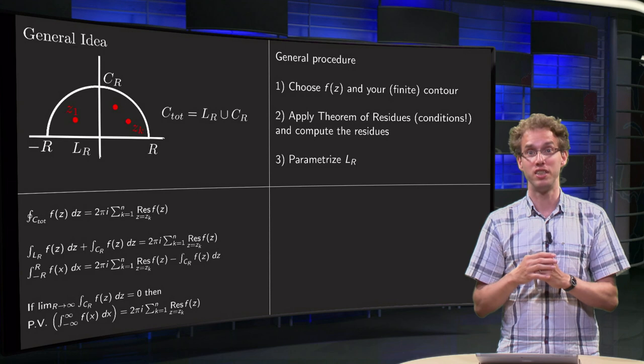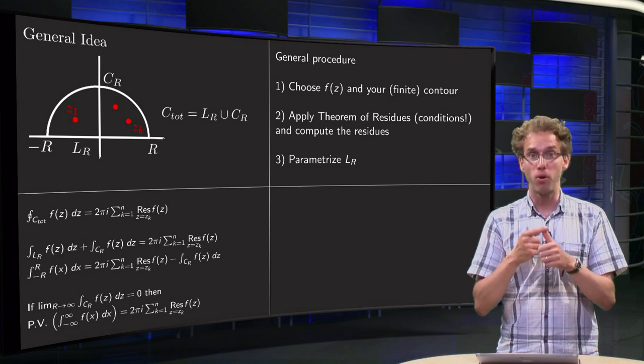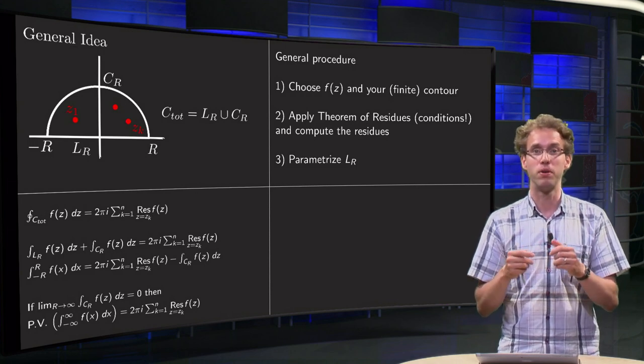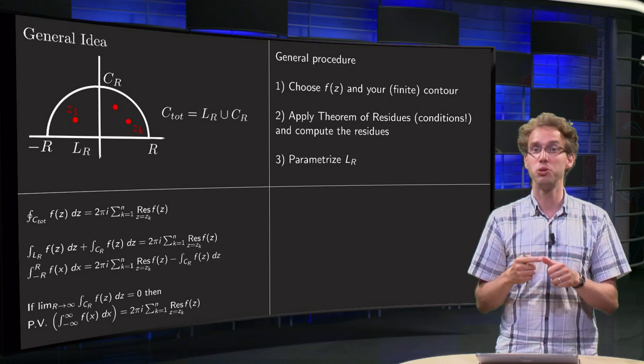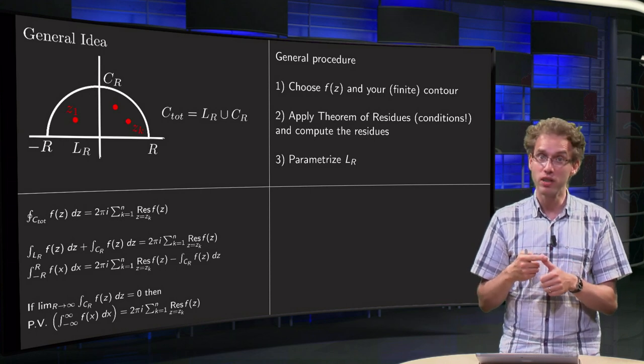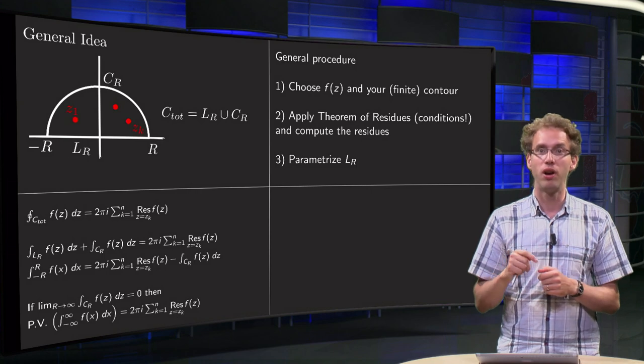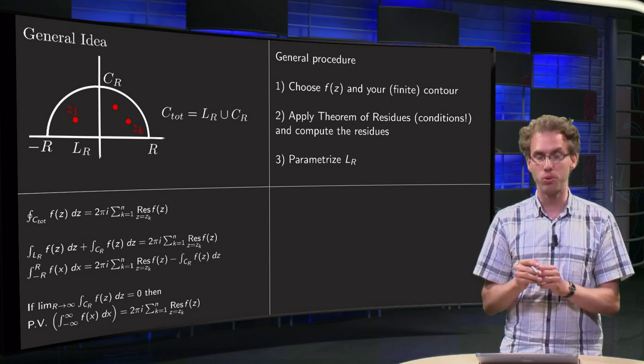So, let us summarize the general procedure. First step, always a very important step. You have some real function. You have to choose your f of z, smart. And you have to take your finite contour,